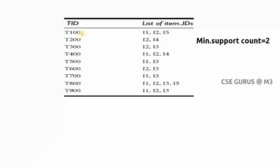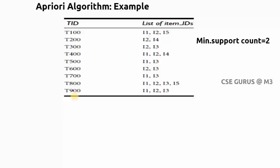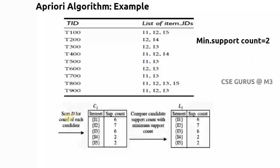Let us consider a database consisting of nine transactions, where each transaction lists items purchased by customers. In the first transaction, three items are purchased: I1, I2, I5. In the second, I2 and I4, and so on. The question is: find all frequent item sets using the Apriori algorithm where the minimum support count is given as two.